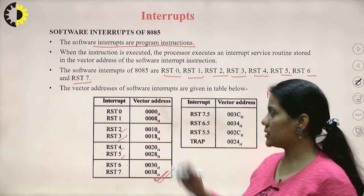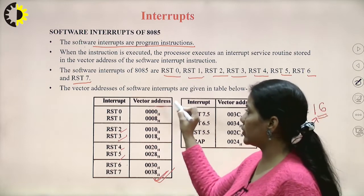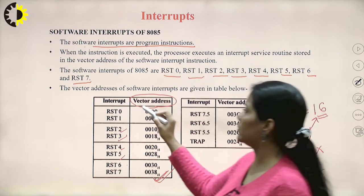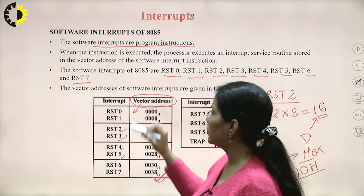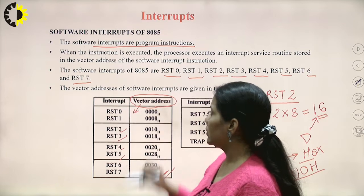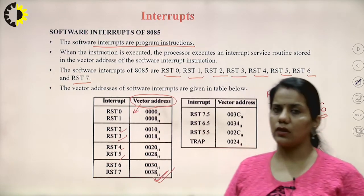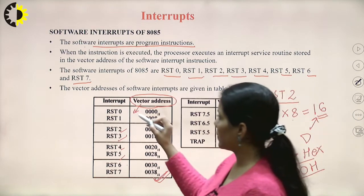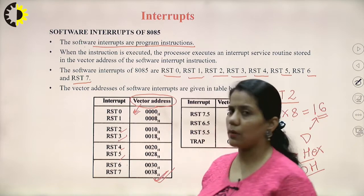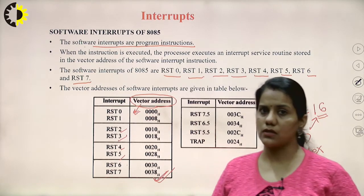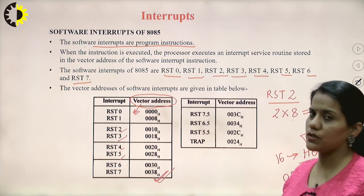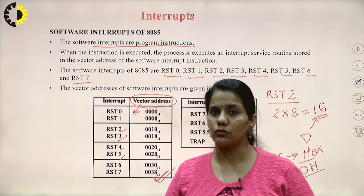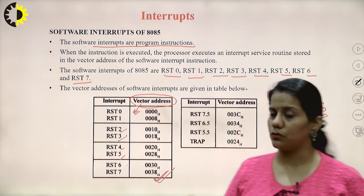These addresses are termed vector addresses. The term 'vector', as we already know from physics, means direction. So it gives us the direction — the memory location to which the program control has to go. For RST 7.5, 6.5, 5.5, and TRAP, the vector addresses are similarly predefined.